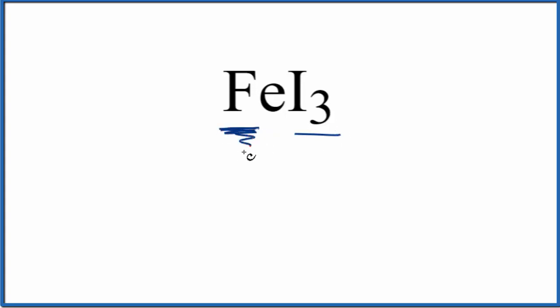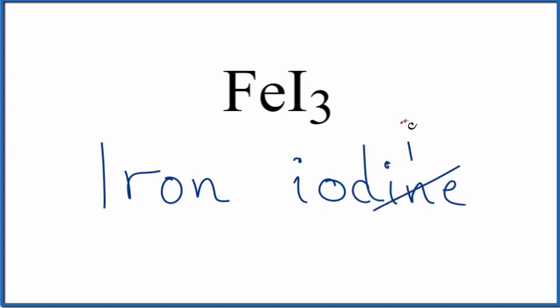Iron is a transition metal, so we're going to need to use Roman numerals in parentheses between the names. For Fe, we have iron. Then I, that's iodine. We get rid of the ending, the I-N-E, since this is an ionic compound, and we write I-D-E.